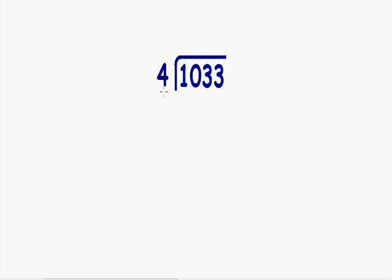Let's get started. How many times does 4 go into our first number, 1? It goes in 0 times because 4 is actually bigger than 1. So let's look at our first two numbers. How many times does 4 go into 10 without being too big? 4 goes into 10 two times. 4 multiplied by 2 is equal to 8. You want to subtract 10 minus 8, which is equal to 2.